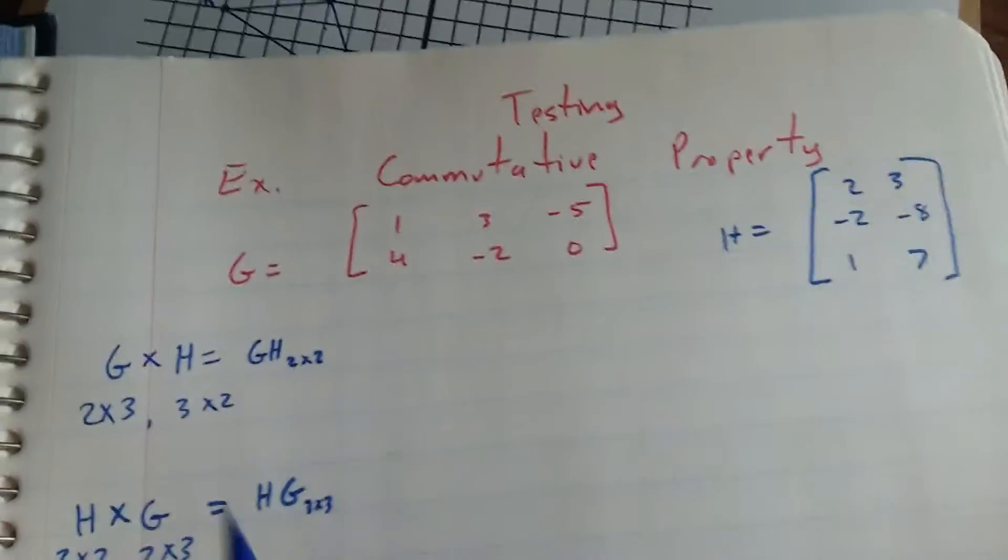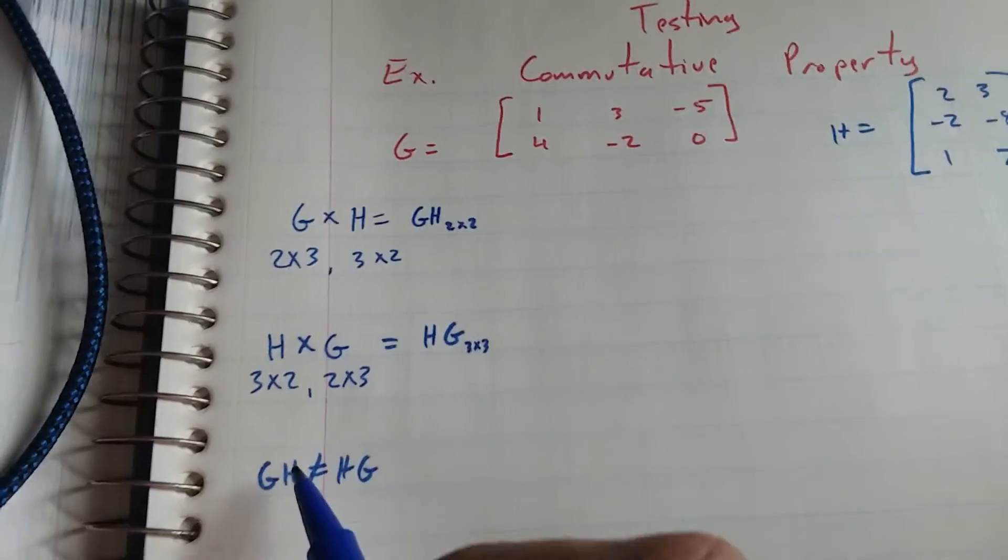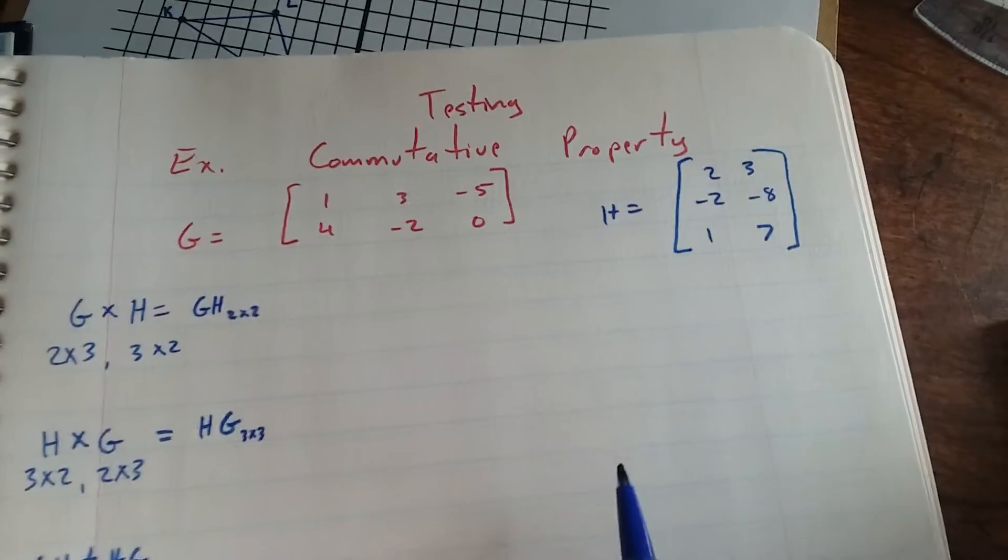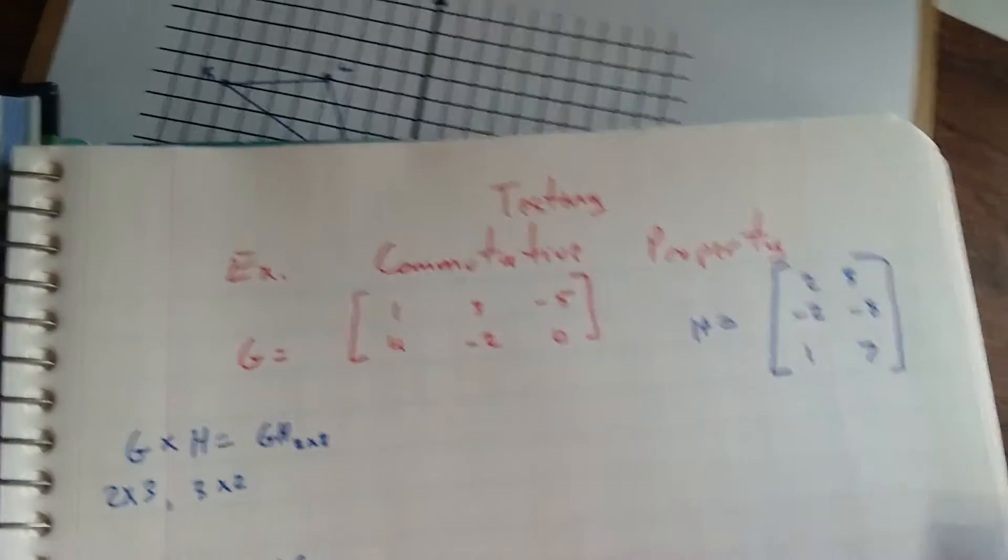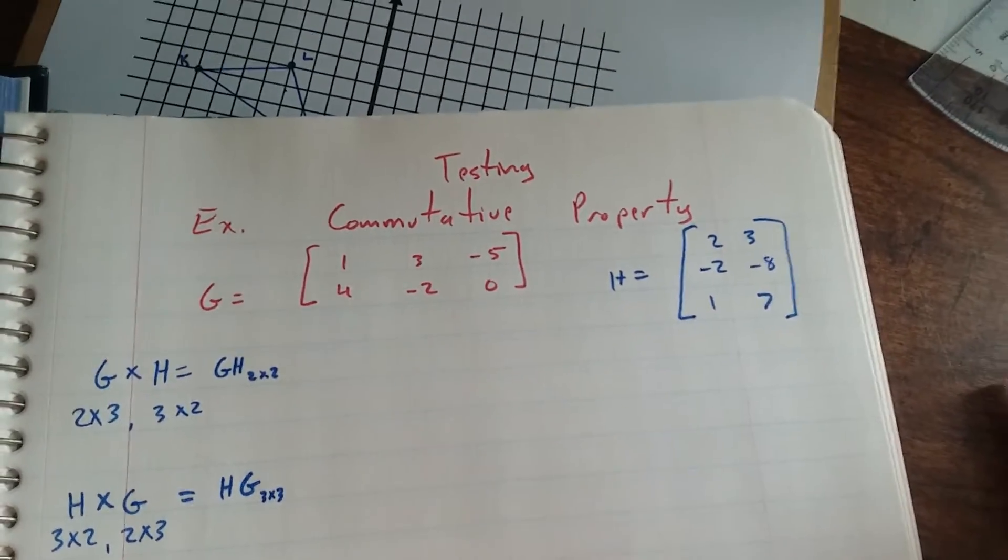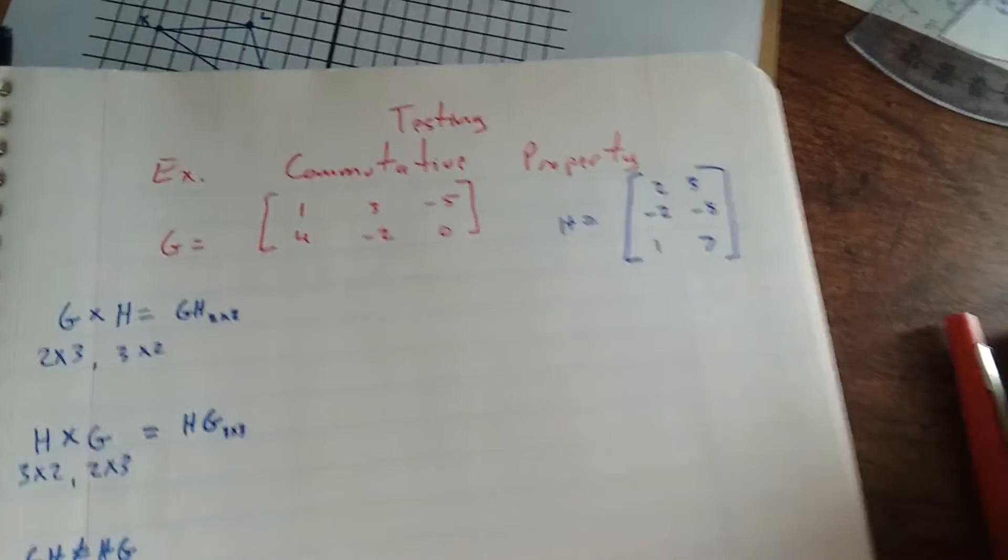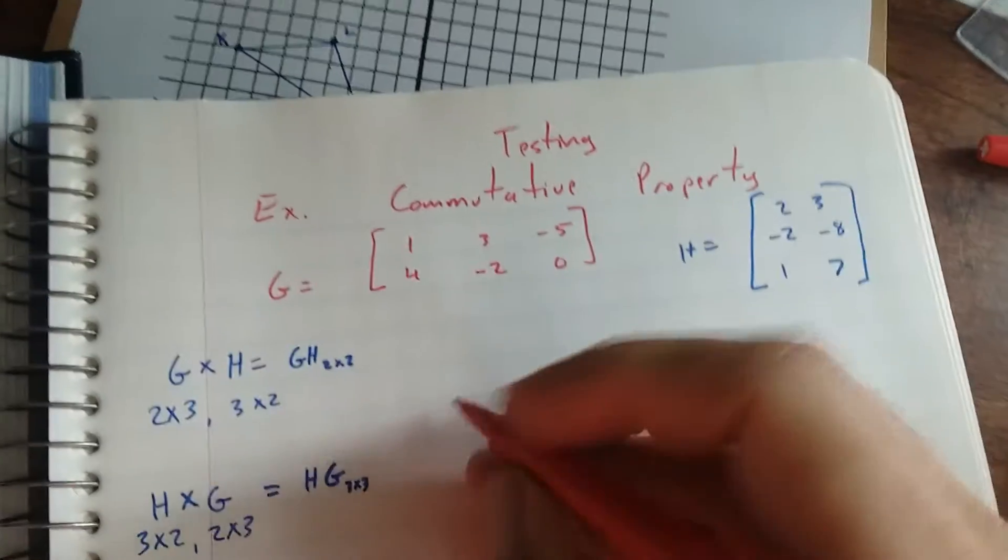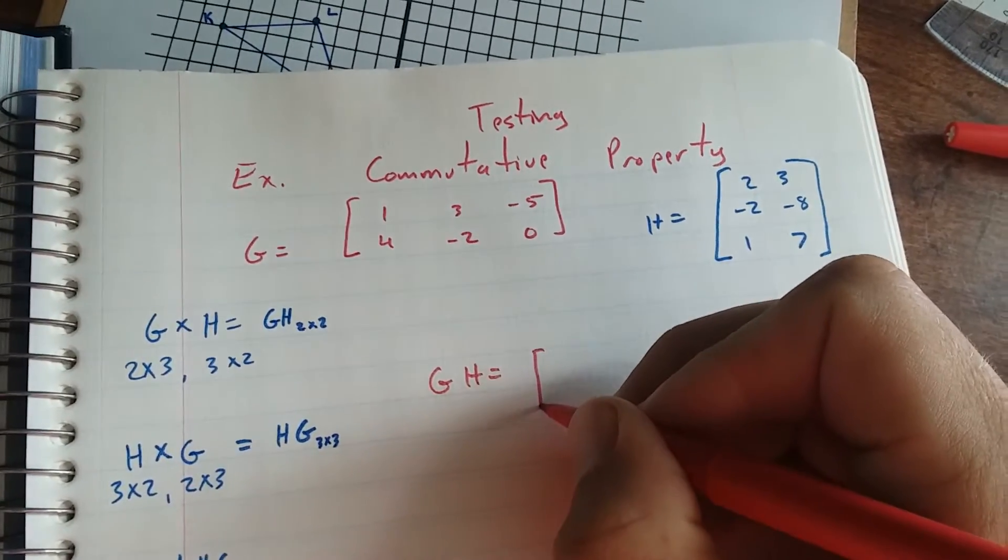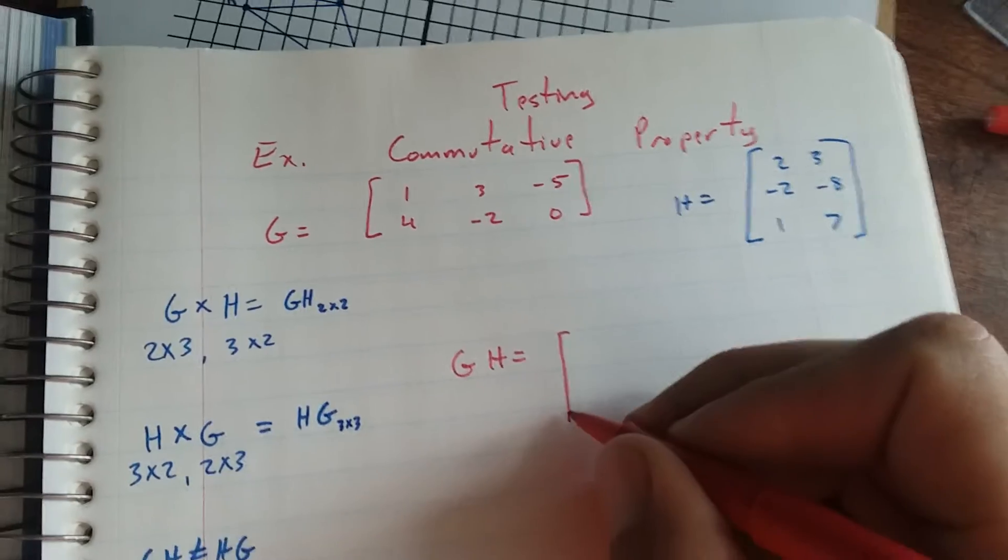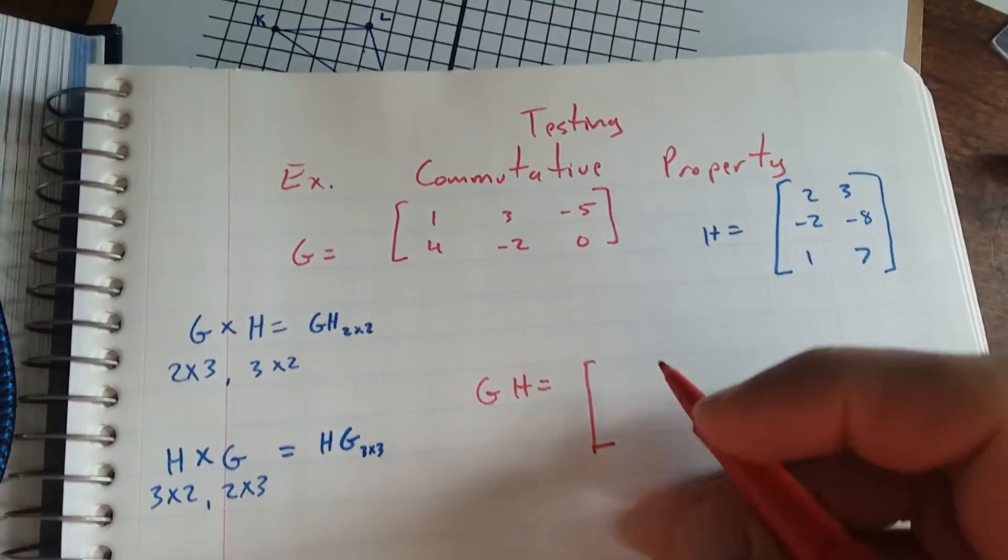You cannot, GH is not equal to HG. And we're going to show that right here. We're going to do G times H. So what I do when I do G times H is, it's going to be a 2 by 2, so I know I only have to go down 2.